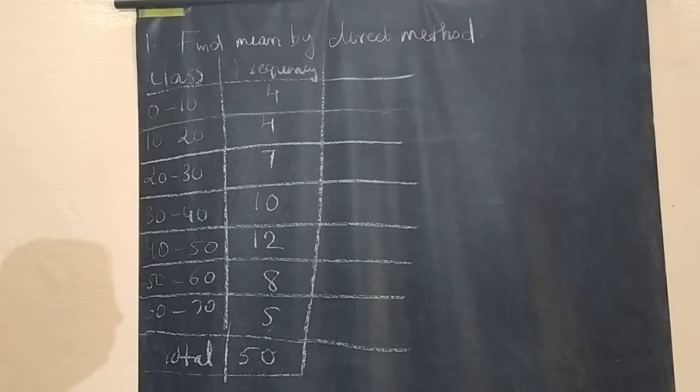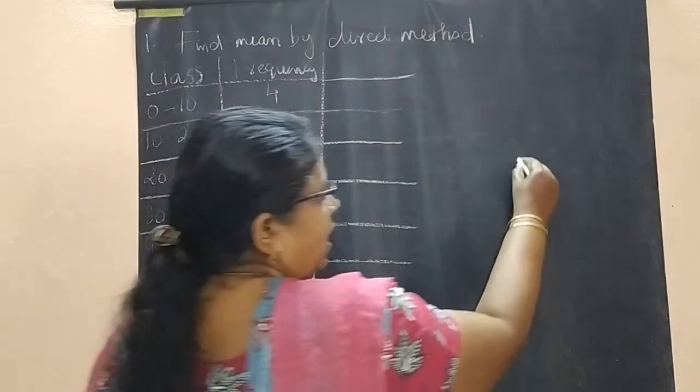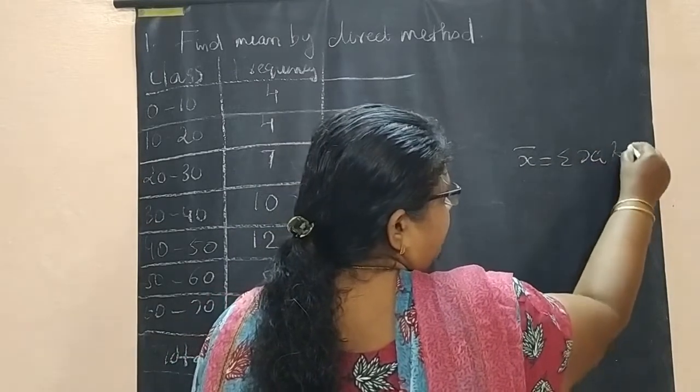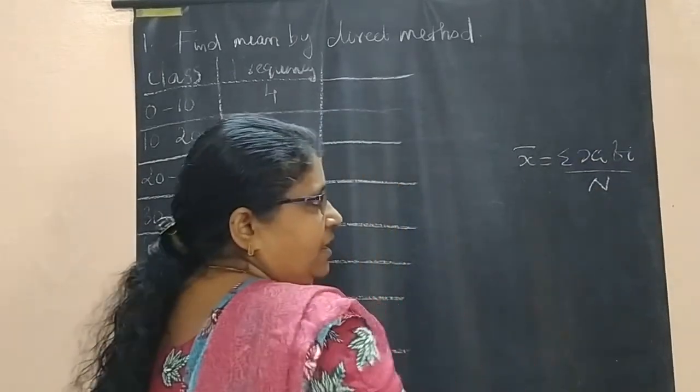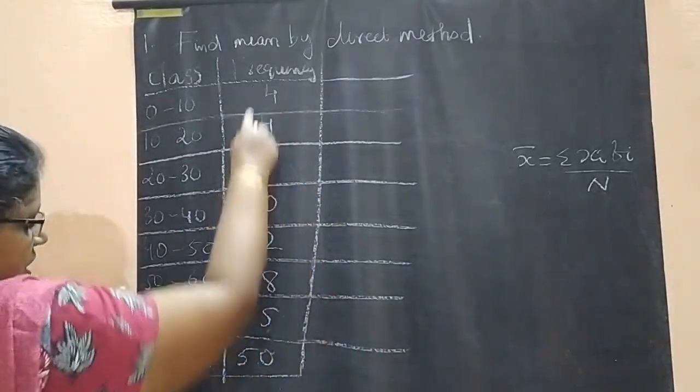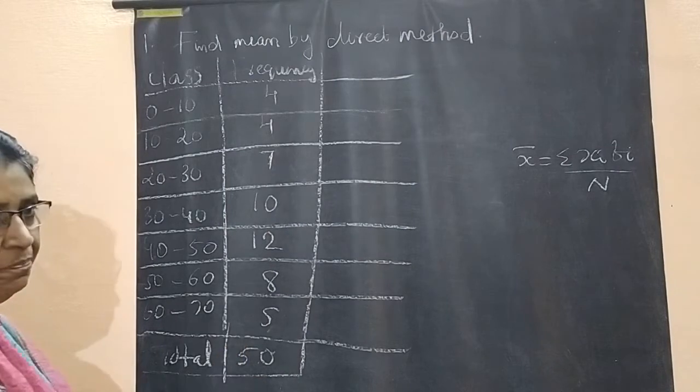Our formula is x̄ = Σ(xi·fi) / N, where capital N is the sum of all the frequencies, that is already given, 50.